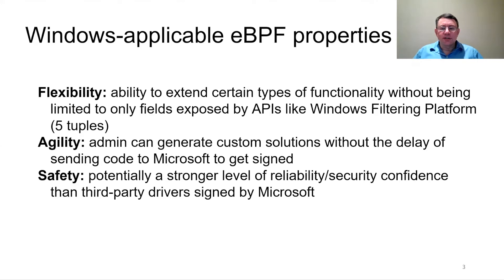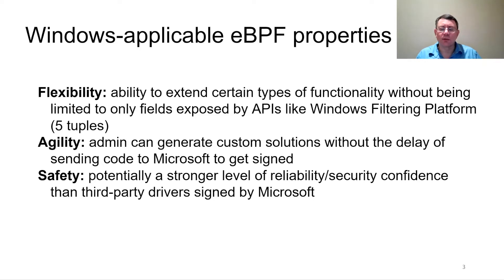There are a couple of properties of eBPF that are really attractive that we don't already have in the Windows world. The first one has to do with flexibility. We have APIs such as the Windows Filtering Platform, which is what people use to develop firewalls and filter drivers. Those APIs have sort of fixed schemas — like five tuples — where you can't necessarily do arbitrary things. The flexibility that eBPF provides, with a full set of helpers, lets you do relatively arbitrary things subject to what the verifier allows.